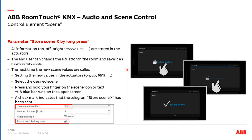Here's how to store a scene: the end user first sets the situation in the room — switches lights on, dims darker, drives the shutter to a position, and so on. Then they go to the scene, select it, press and hold their finger on the scene. A blue bar runs across the top and at the end a confirmation appears that the scene is saved. The RoomTouch sends the 'store scene' command. The difference is: short press calls the scene, long press stores it. To enable this you must set the parameter 'Store scene by pressing'. This allows the end user to change scenes between, for example, summer and winter with different lighting or shutter positions.